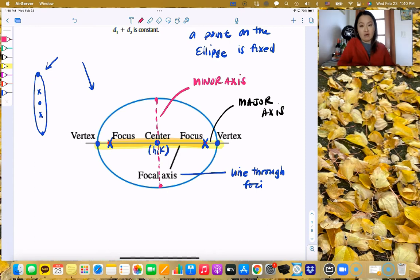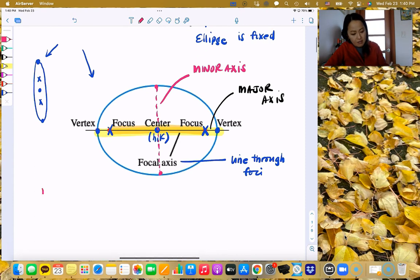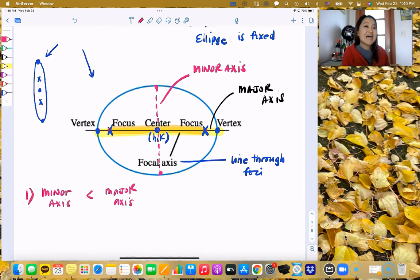Again, who is shorter? That's obvious, right? Minor axis is definitely shorter than the major axis. I think these are, a lot of these things are just kind of common sense. Foci is two focus put together.